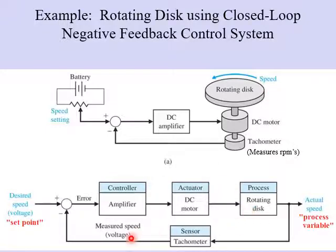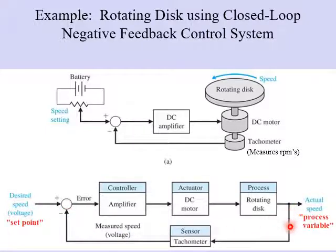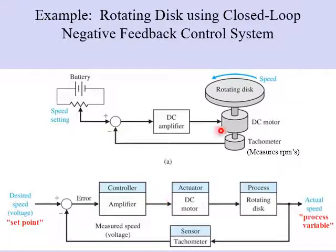In the block diagram for this system, the input is the desired speed or voltage — that's our set point. The output, which is the speed, is measured by the tachometer sensor and compared with the input. That error signal goes into the controller or amplifier, which sends a signal to the actuator — the motor that turns the disk. The motor drives the rotating disk, which is our process.